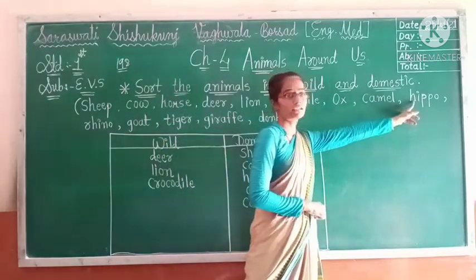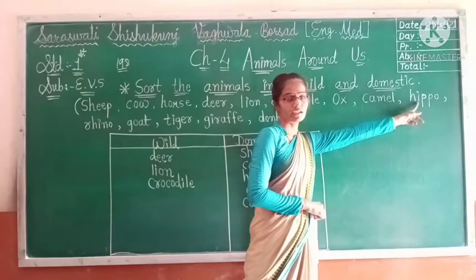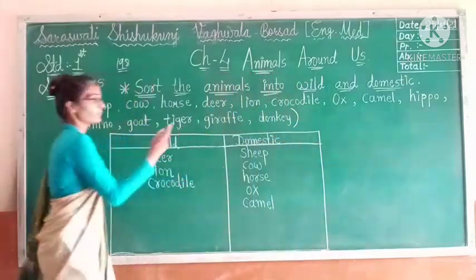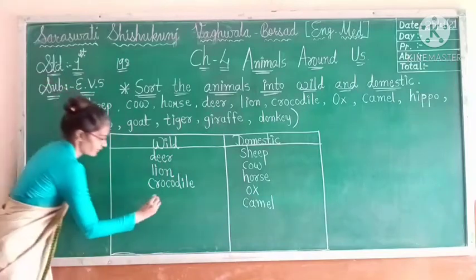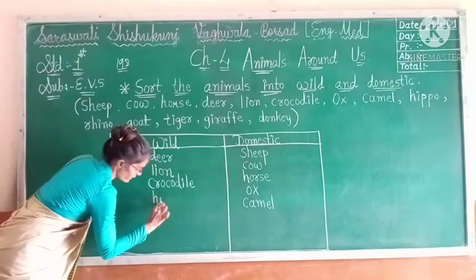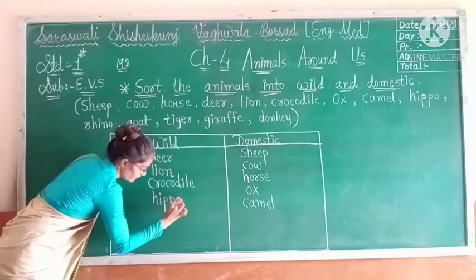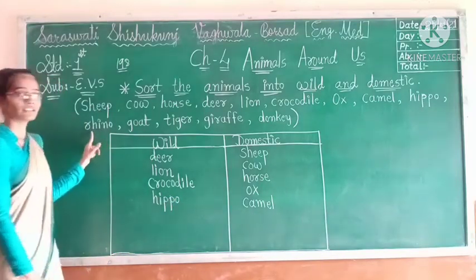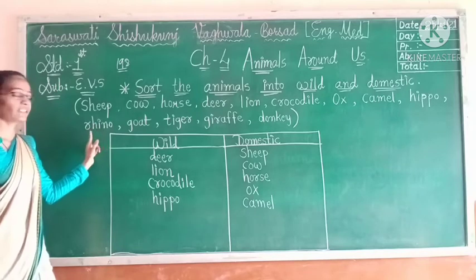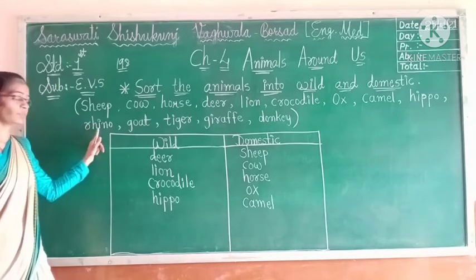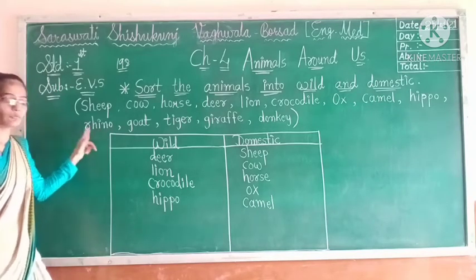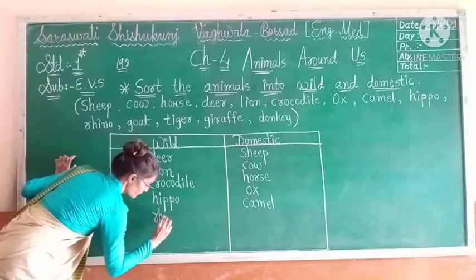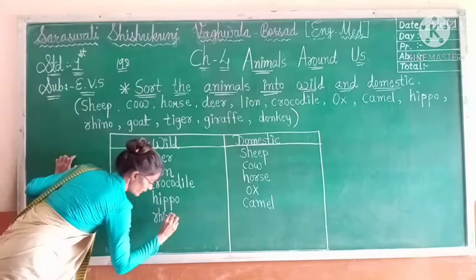Then after that is hippo. Hippo is a wild animal because we can't find it in our surroundings, so we will write it here under wild animals. Then after that is rhino. Rhino is also a wild animal, so we will write rhino here under wild.